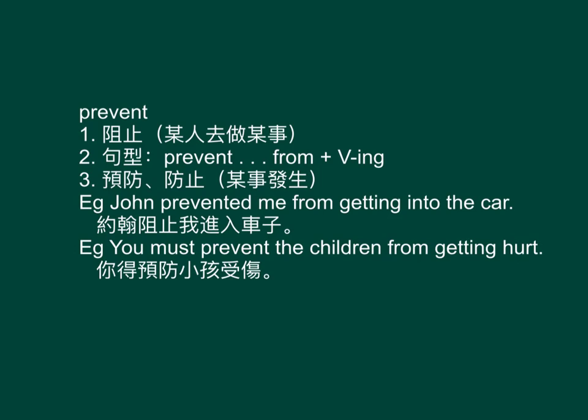Prevent means to stop someone from doing something — 阻止某些人去做某些事. The structure is: prevent [object] from [verb in present tense]. It also means to prevent something from happening — 預防,防止某些事發生. For example: John prevented me from getting into the car — 約翰阻止我進入他的車。 You must prevent the children from getting hurt — 你必須要預防小孩子受傷。